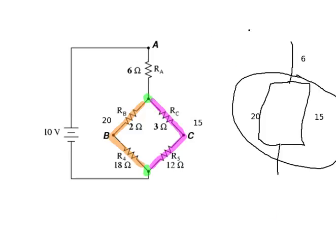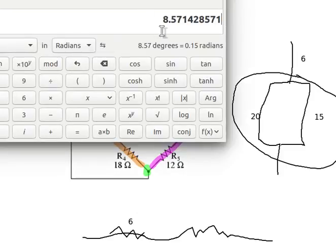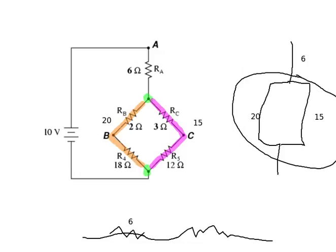Now, notice it doesn't really matter if I draw it vertical or if I switch it. So I'm going to go ahead and now switch it so that over here, I've got my 6 ohm resistor. And then I continue to what is now my new combination of the 20 and 15, which is going to be approximately 8.57 and fill that in as my 8.57.